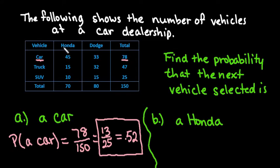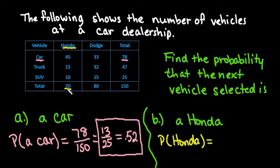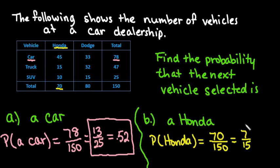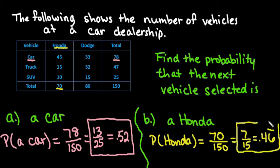Next, we find the probability of selecting a Honda, regardless of what kind of vehicle it is — car, truck, or SUV. Again, this is in the margins, so we have 70 out of 150. This reduces to 7 over 15, or as a decimal 0.46 repeating. You could round it to 0.47 or 0.467. You could also write it as a percent.